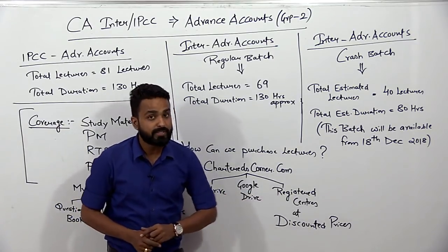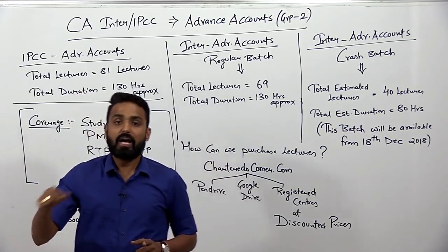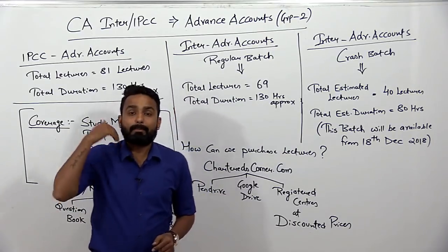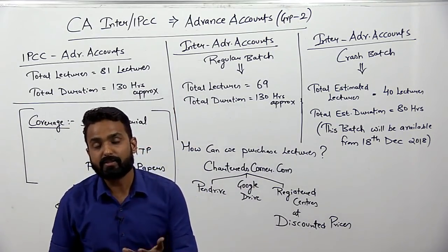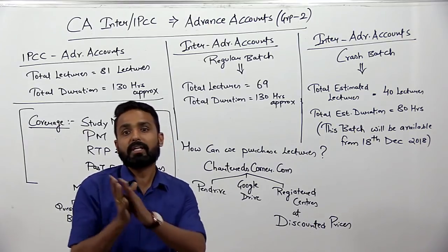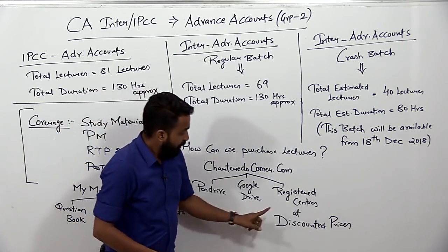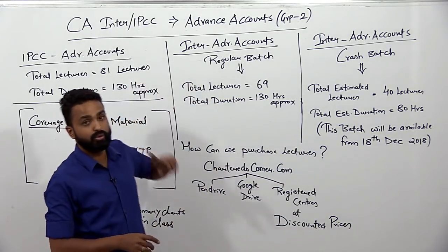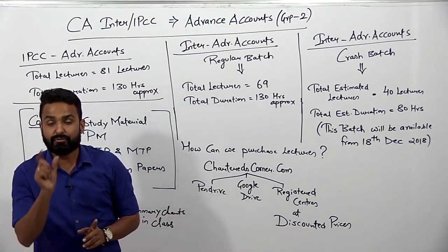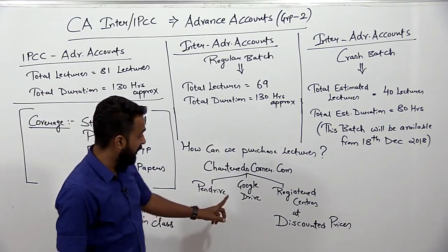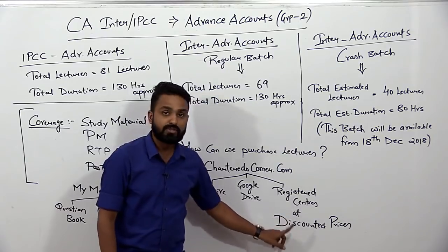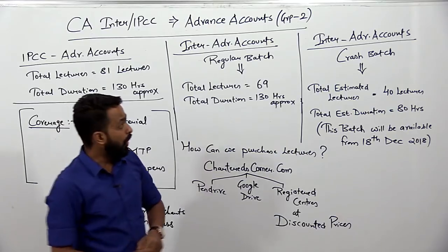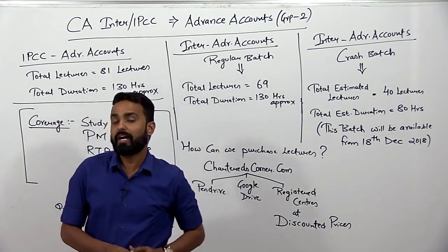Registered centers के through purchase करते हो तो registered center में जाकर discounted price पर fees pay करनी होगी, और वो लोग आपकी pen drive या hard disk में lectures copy करके install करके देंगे। Regular batch के लिए Google Drive vs registered center का difference लगभग 700-800 रुपए रहता है। Crash batch के लिए minimum 500 रुपए का difference मिलेगा।